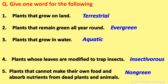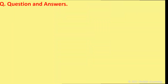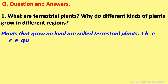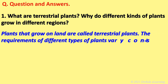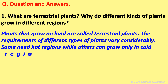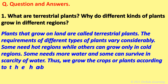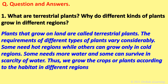Question and answers. What are terrestrial plants? Why do different kinds of plants grow in different regions? Plants that grow on land are called terrestrial plants. The requirements of different types of plants vary considerably — some need hot regions while others grow only in cold regions, some need more water and some can survive in scarcity of water. Thus we grow crops or plants according to the habitat in different regions.